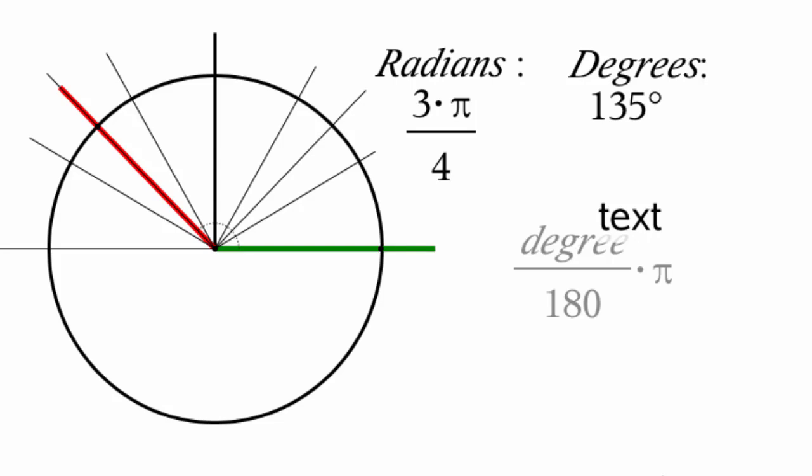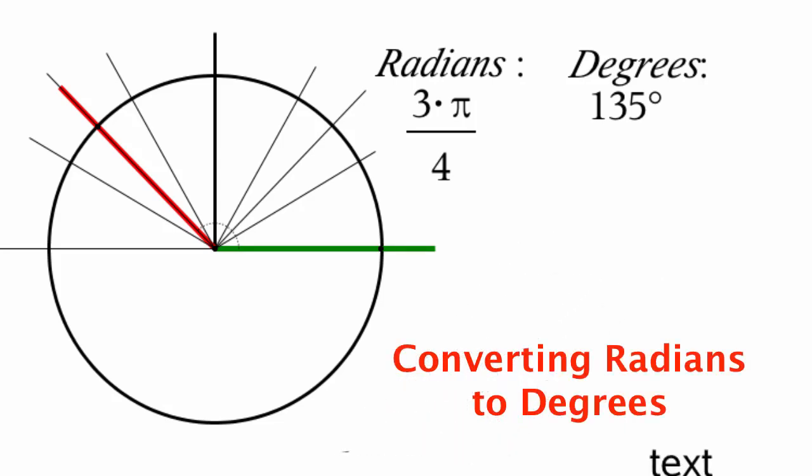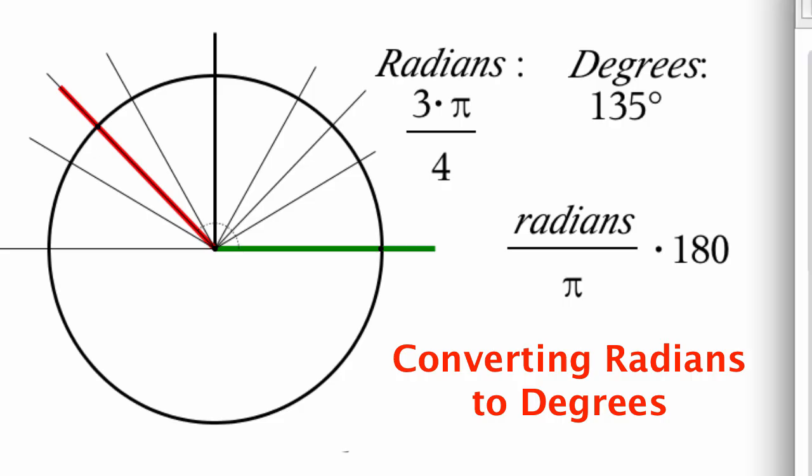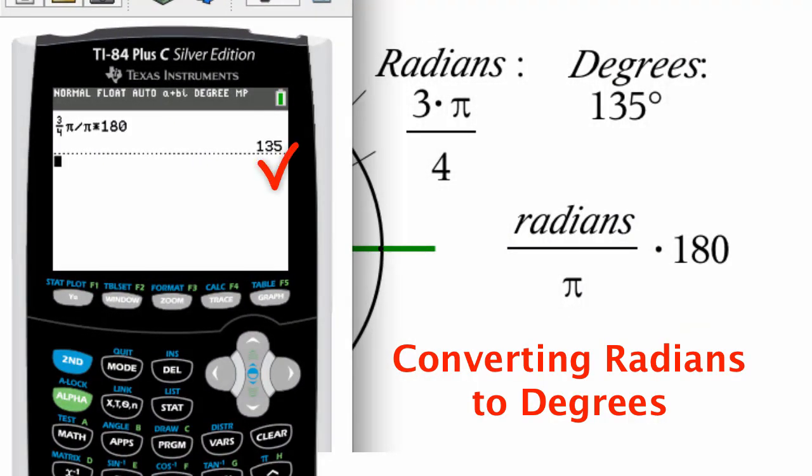Okay, so let's convert between given radians to get a degree measure. Here's the formula for doing that. You take your radians, divide it by pi and then multiply by 180. Here is the calculation for that. I encourage you to give this a try on your calculator. Just put in 3 fourths times pi divided by pi times 180 and there we go, 135 degrees.